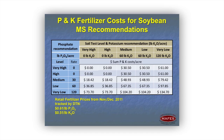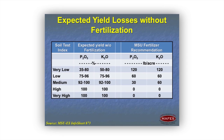With soil test indexes properly correlated to crop response, we can give some indication of expected yield loss if you do not fertilize soybeans. On the left-hand side we have categorical ranges and on the right-hand side we have the expected yield loss and the Mississippi State fertilizer recommendation. This data suggests that if you're in the medium category you're going to harvest 92 to 100% of your relative yield.